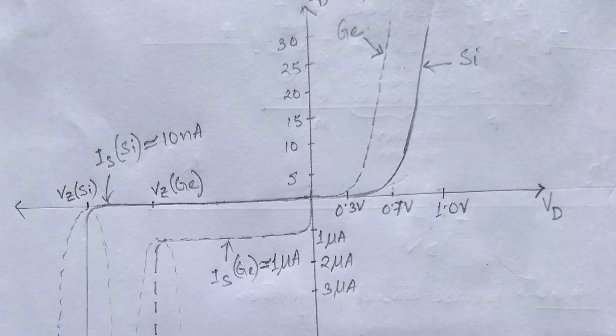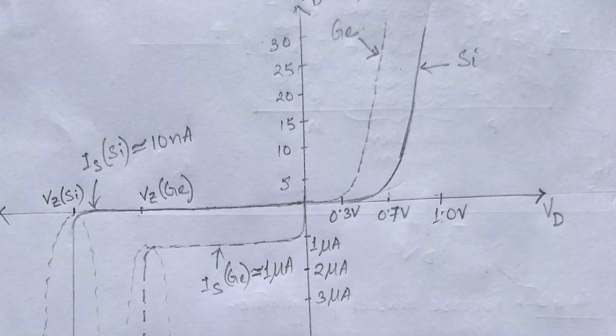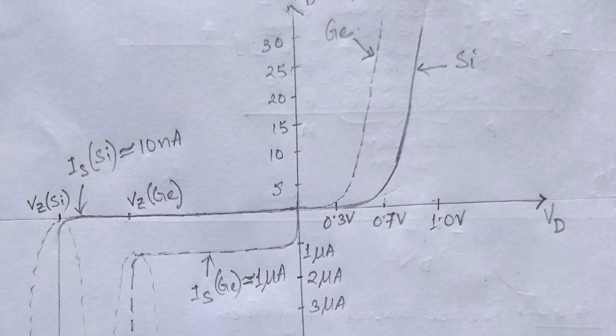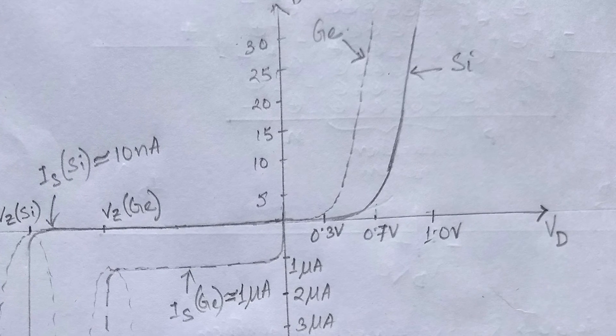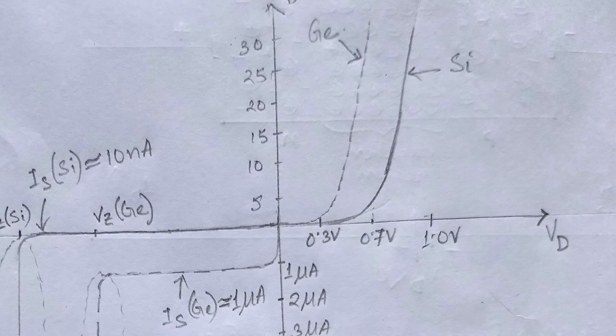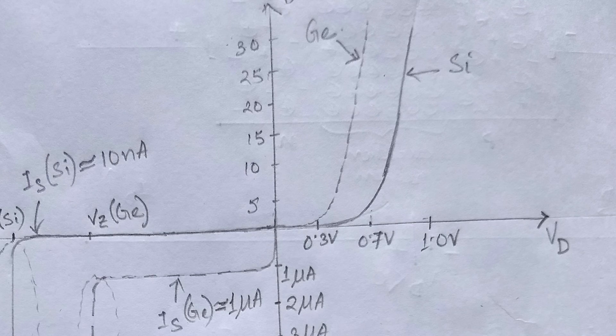The potential at which the rise in current occurs is referred to as offset, threshold, or firing potential. This forward voltage is denoted by VT, which is 0.3 volts for germanium and 0.7 volts for silicon.